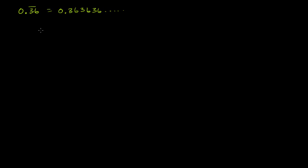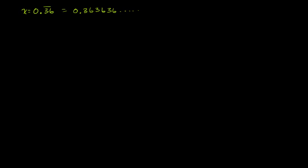Now, the key to doing this type of problem is instead of multiplying like we did in the last video, we set this as equal to x. Instead of just multiplying by 10 — which would only shift it 1 over — we want to shift it over enough so that when we line them up, the decimal parts will still line up with each other. To do that, we want to shift the decimal 2 places to the right, so we multiply by 100, or 10 to the second power.